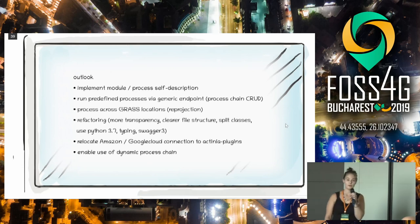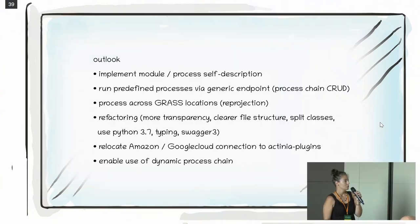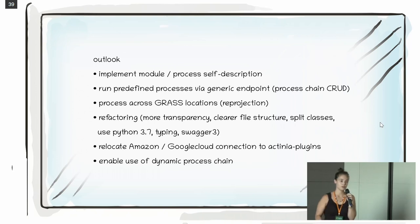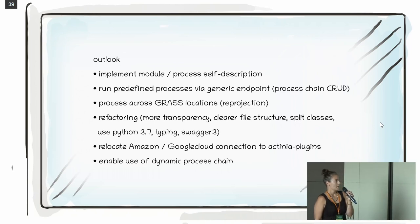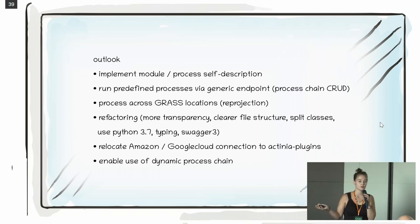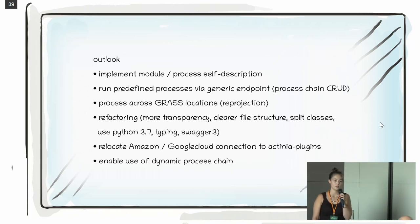Like every open source project, there are always a lot of things to do. The first items are somewhat technical — for example, process chain management via REST, so that I can create my own process chain, store it, and execute it repeatedly without needing to save it locally. Refactoring is also important because the project grew over time and it wasn't always clear what would be integrated, so refactoring makes the code cleaner.